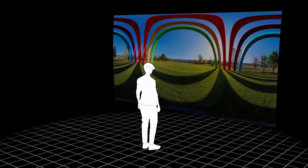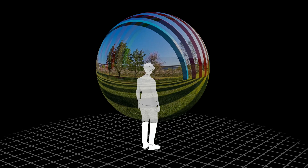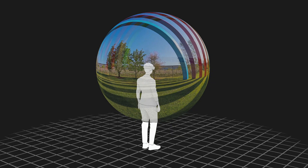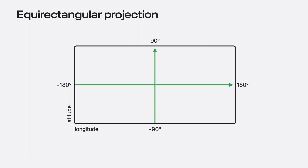The equirectangular projection, also known as the equidistant cylindrical projection, is widely supported by editing applications such as Final Cut Pro. In the equirectangular projection, the pixel coordinates of an enclosing sphere are expressed as angles of latitude and longitude, and projected equally into the rows and columns of a rectangular video frame. The horizontal axis maps longitude from negative to positive 180 degrees, while the vertical axis maps latitude from negative to positive 90 degrees.